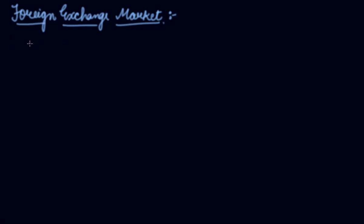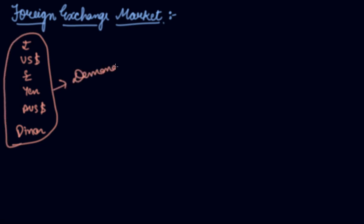There are different currencies - US dollar, pound, yen, Australian dollar, dinar. All these currencies are traded where there is demand and supply of national currencies of different countries in the world. This is your foreign exchange market.